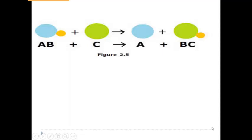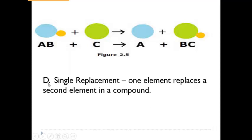In our third type of chemical reaction, we're going to be looking at single replacement reactions. In a single replacement reaction, you're going to have one element replacing a second element that's in a compound. So take a look at our example: we have this atom that is by itself, and it is going to replace atom A in our compound. On the product side, we don't have A bonded to atom B anymore — we have A by itself, and atom C and atom B form a new compound. So we're going to have one element replacing another.